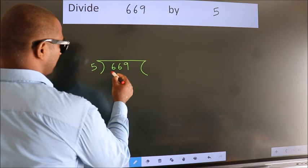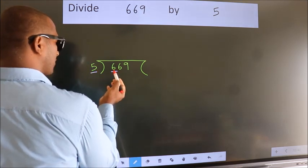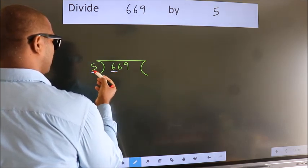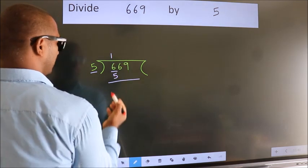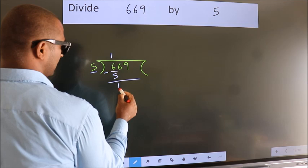Here we have 6, here 5. A number close to 6 in 5 table is 5 once 5. Now we should subtract. We get 1.